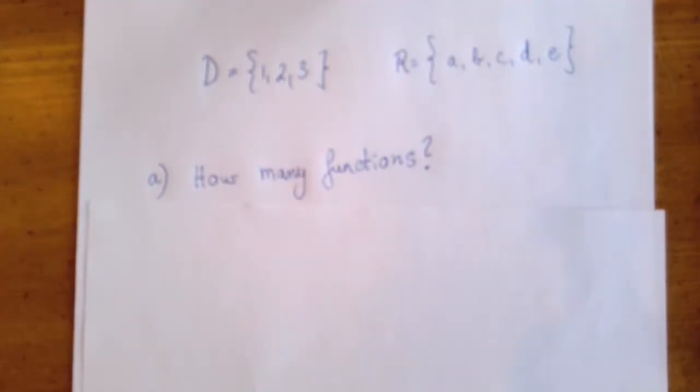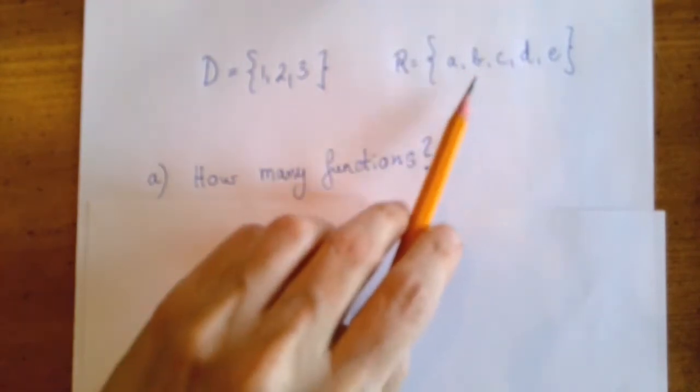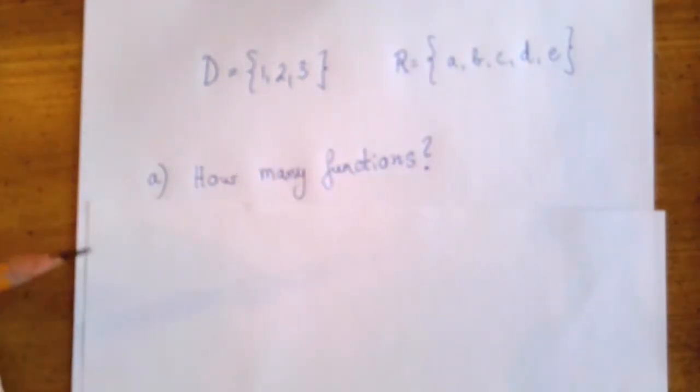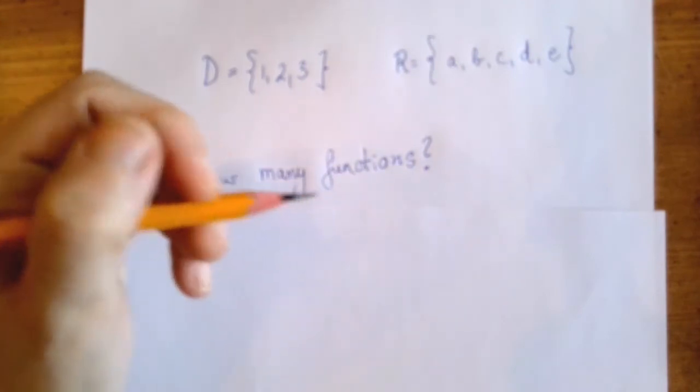In case of a function, we are allowed to assign only one value to each element of the domain. To one, we can assign either A or B or C or D or E. So that's five possibilities.